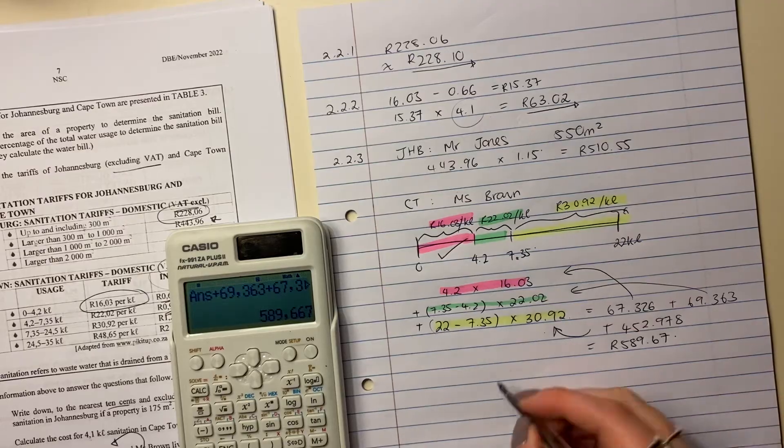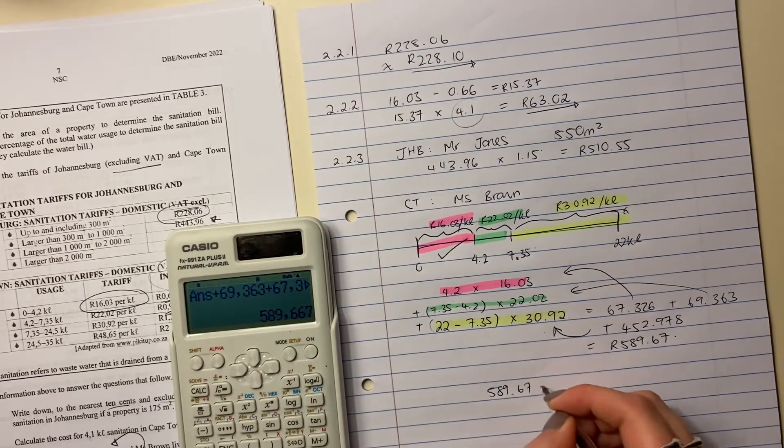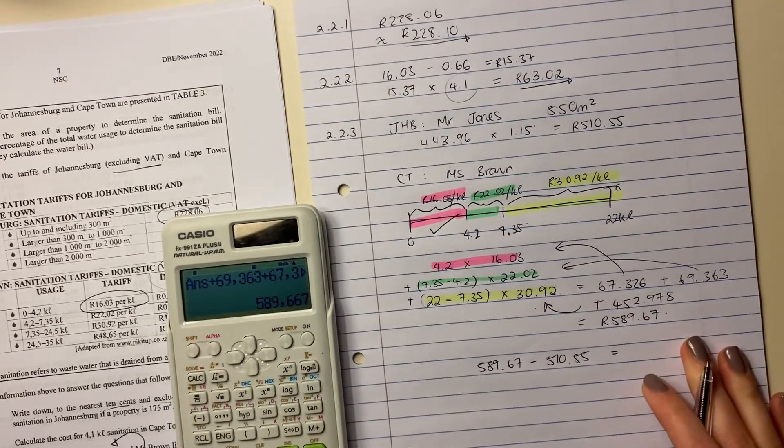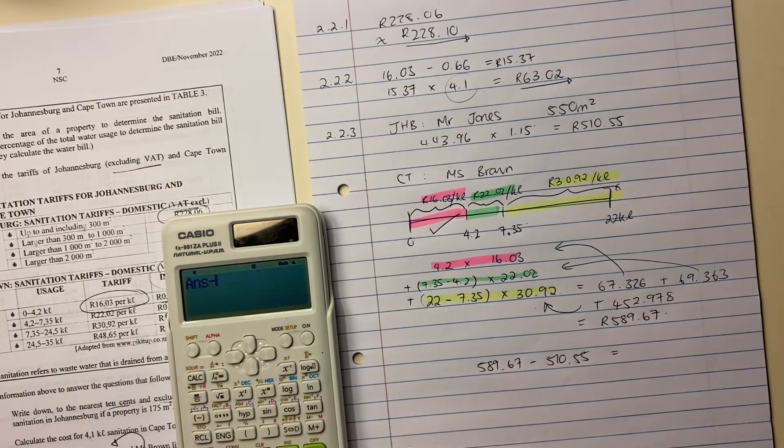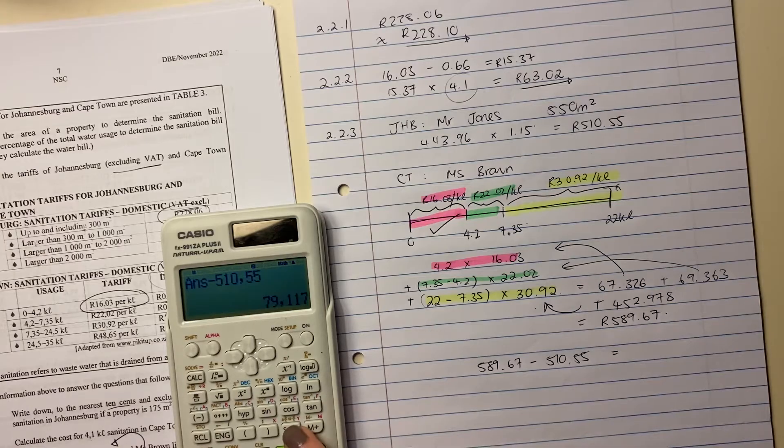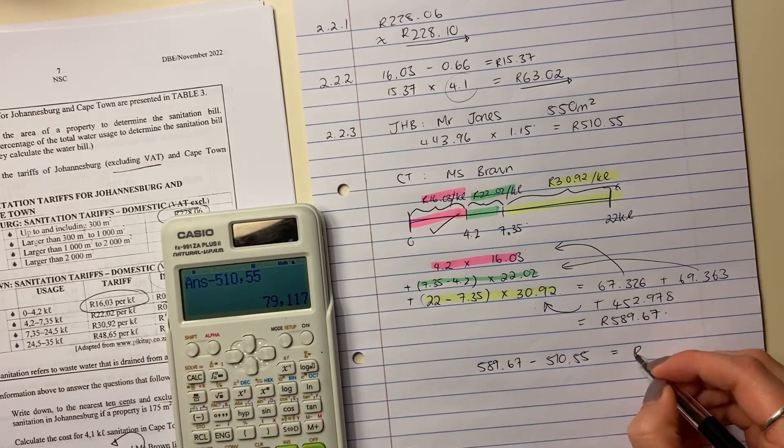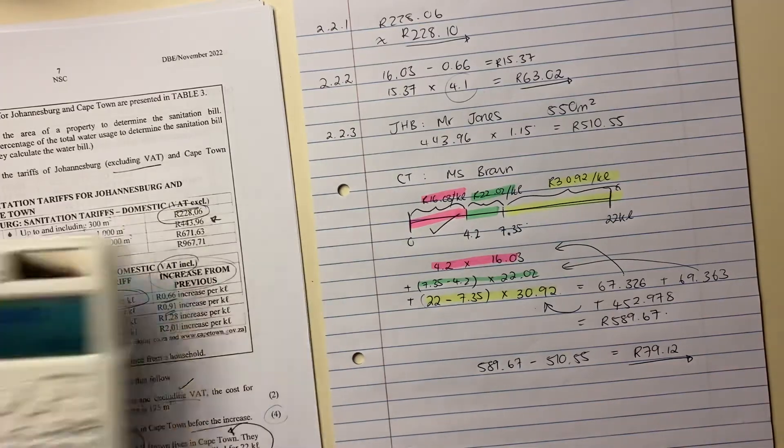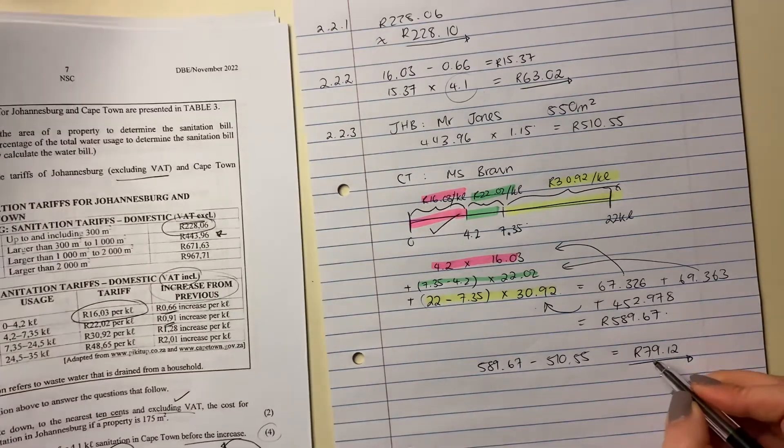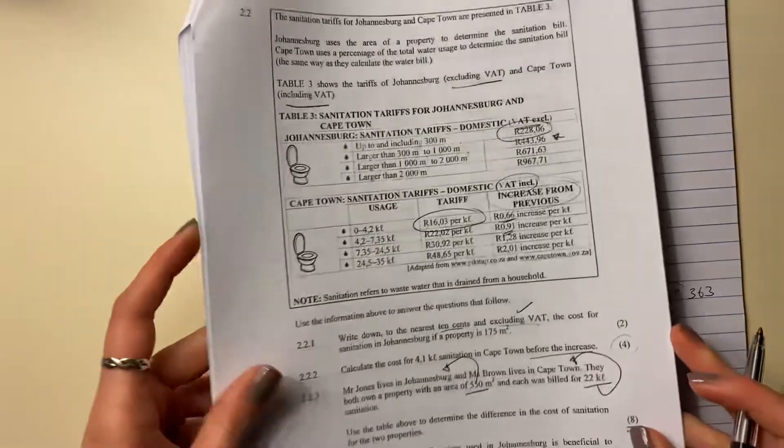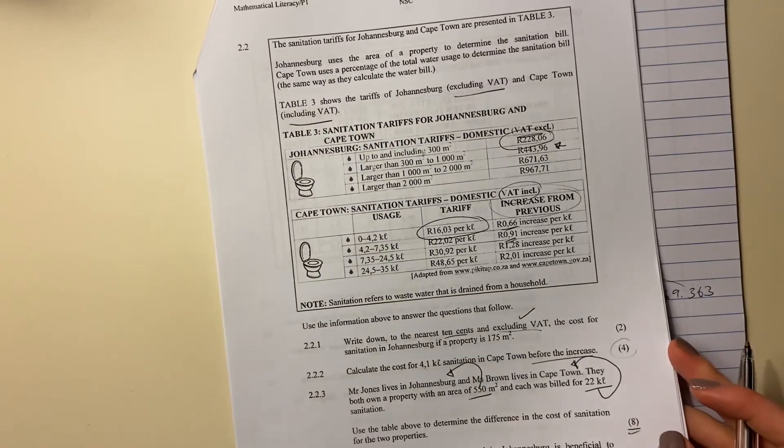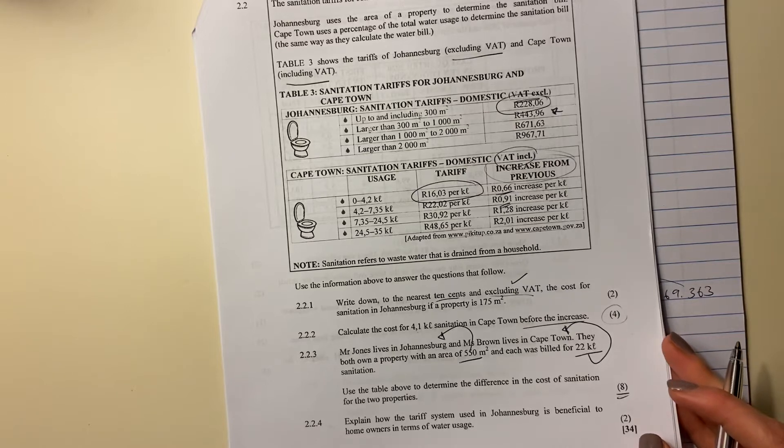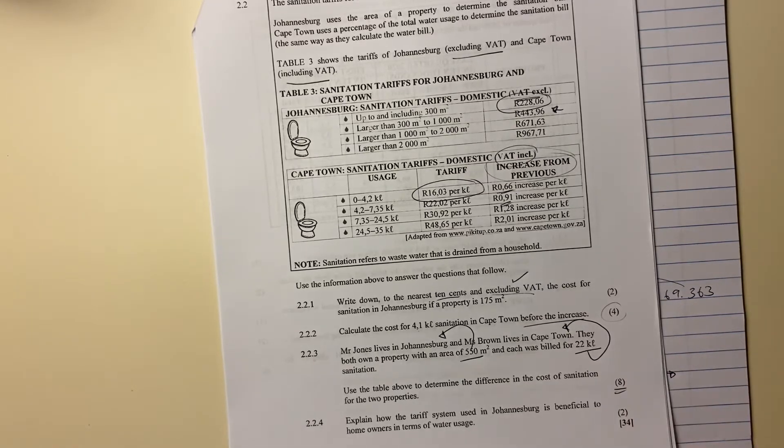So what was the difference? So now we need to say 589.67 minus 510.55. And our answer is 79 rand and 12 cents. So what is the difference? It's 79 rand and 12 cents. And it's quite a big question. But do you see if you just break it down logically, it's actually not too bad to get all the marks that you need. So we're done with that one. Quite a big question.